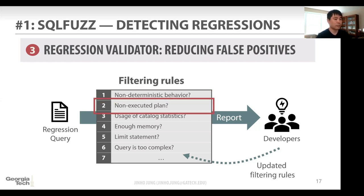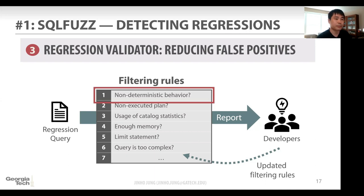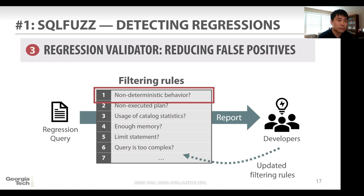Are you fuzzing insert, update, delete queries — things that actually modify the table — or only SELECTs? We only consider SELECT, but in our next version of Apollo we are considering CREATE, DELETE, and UPDATE — everything. And non-deterministic behavior — like the OS doing something in the background or your disk controller behaving weird — how do you handle that? After we discover the regression, we run the query multiple times to check the actual running time with the average value.